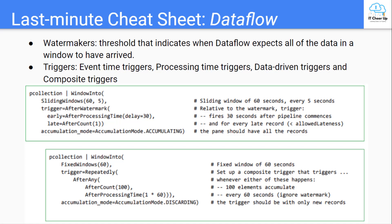The watermark is a threshold that indicates when Dataflow expects all of the data in a window to have arrived. Beam's default windowing configuration tries to determine when all the data has arrived based on the type of data source, and then advances the watermark past the end of the window. However, this default configuration does not allow late data.